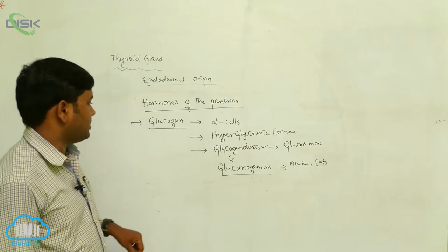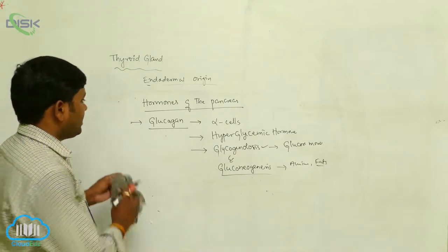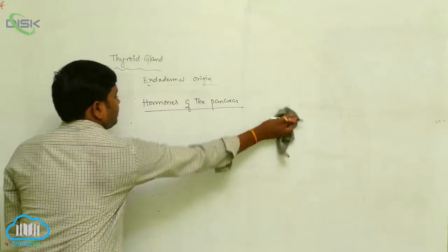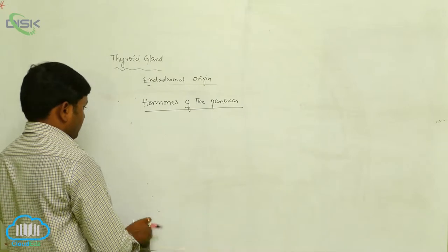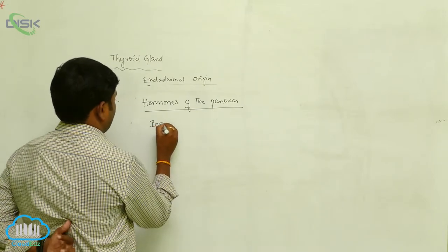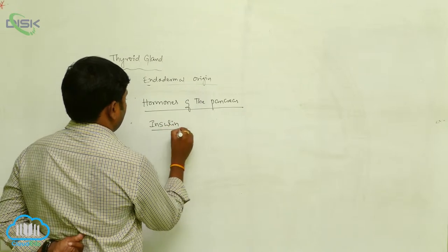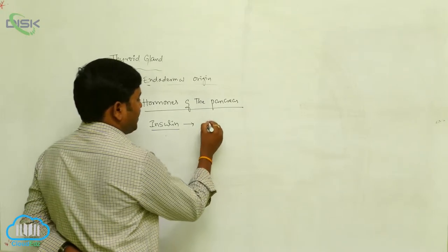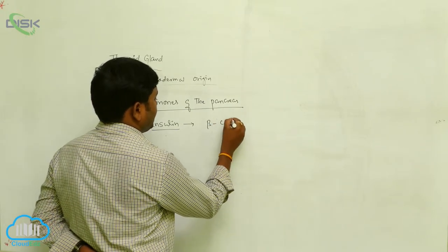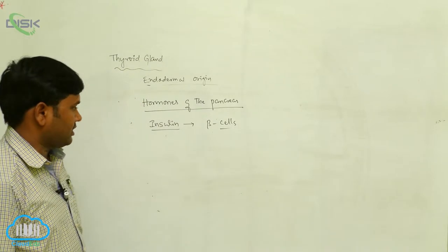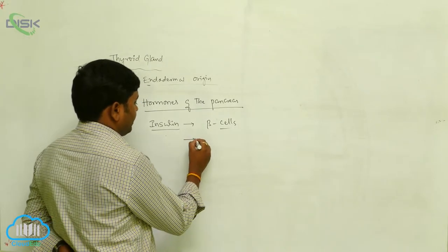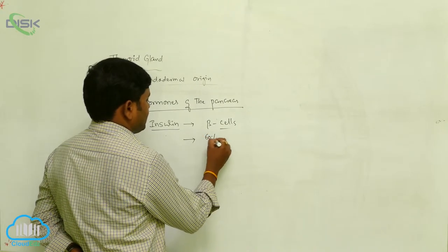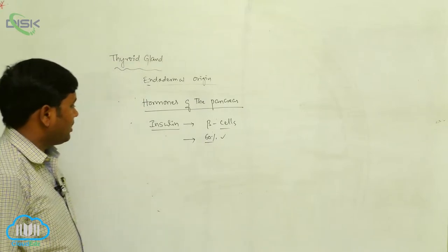Another hormone is insulin. It is derived from the beta cells of the islets of Langerhans. Nearly 60 percent of the cells present in the islets of Langerhans are beta cells.